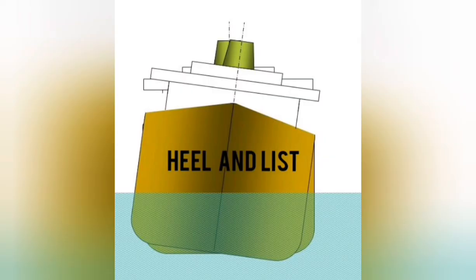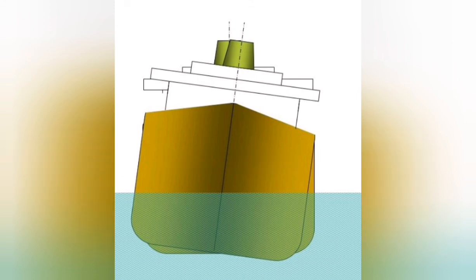Down or Trim by the Stern: It is when the aft draft of a ship is larger than the forward draft — the ship is down or trim by the stern. Heel and List: A heel is a temporary inclination of a ship caused by outside forces such as wind, waves, or during a ship's turn. Whenever the center of gravity of a ship is moved off centerline, the ship will create an inclining moment; if no restoring forces are present, the ship will assume a list.